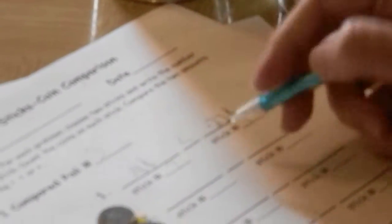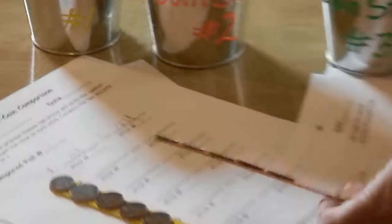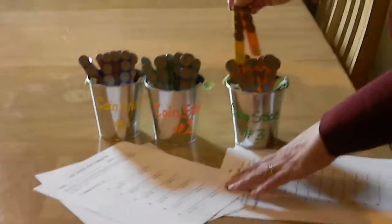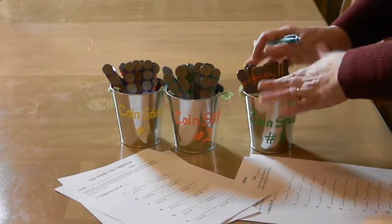And then they would put the correct sign so 18 cents is less than 27 cents so they would do that for the 12 sticks that are in each in whatever pail they choose there's 12 sticks.